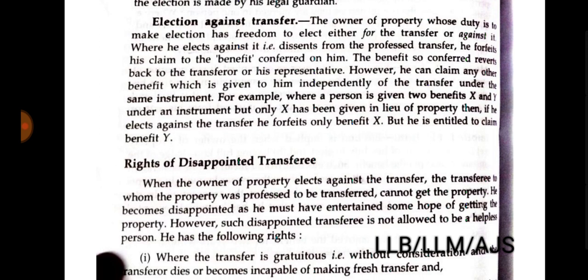Election against transfer. The owner of the property whose duty is to make election has the freedom to elect either for or against the transfer. Where he elects against and dissents from the professed transfer, he forfeits his claim to the benefit conferred on him. The benefit reverts back to the transferor or his representative. However, he can claim any other benefit given to him independently of the transfer — benefits that do not form part of the same transaction.